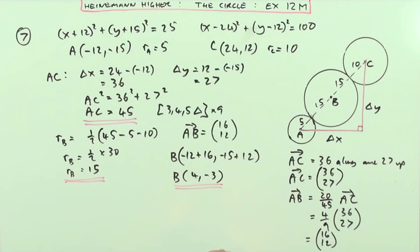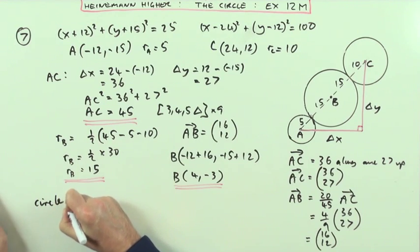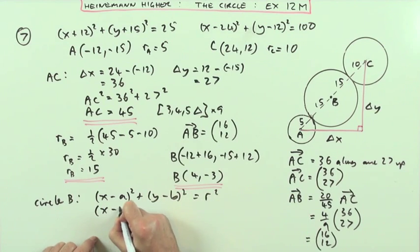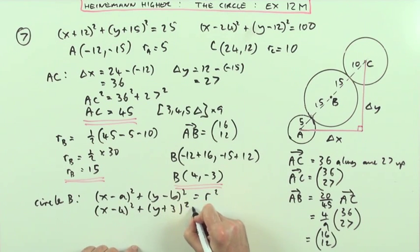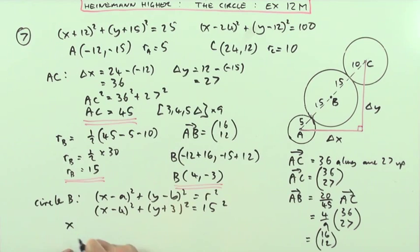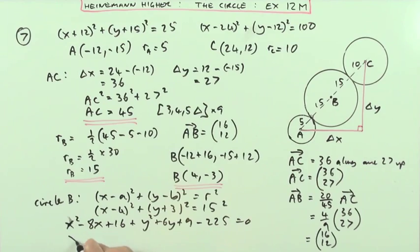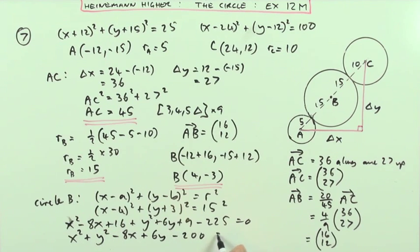Now I can write the equation of circle B using the form (x - a)² + (y - b)² = r². That gives (x - 4)² + (y + 3)² = 15², which equals 225. Expanding fully — squaring the first, twice the product, square the last for both brackets — and collecting terms gives: x² + y² - 8x + 6y - 200 = 0.